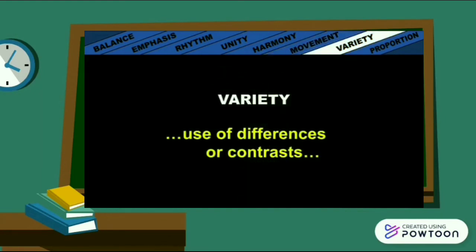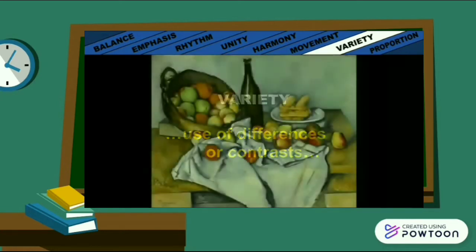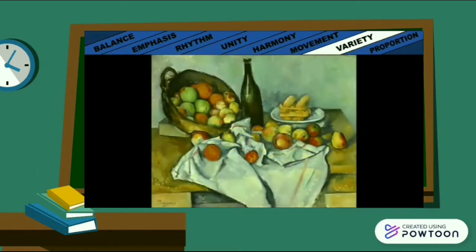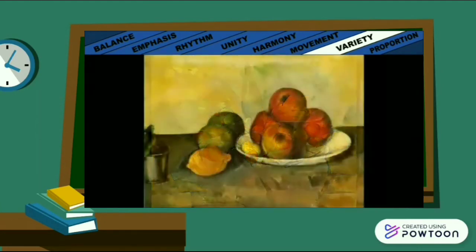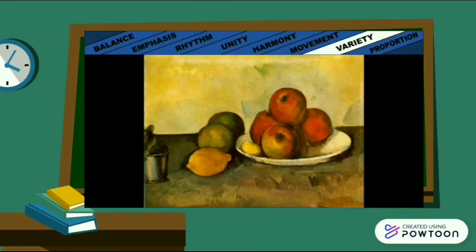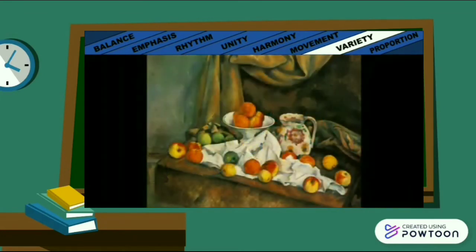Variety is a principle of design. Achieving variety involves the use of differences or contrasts. In three still life paintings by Paul Cezanne, the artist repeated fruits similar in size and shape, but achieved variety by changing the colours of each fruit so that no two are the same.